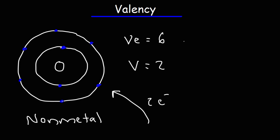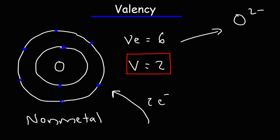Once oxygen gains those two electrons, it's going to turn into the oxide ion. The valency tells us the number of bonds that this element prefers to form when making a chemical compound. Think of water — in water, oxygen has two bonds. Another molecule is carbon dioxide; in that structure, each oxygen atom has two bonds. So oxygen likes to form two bonds because its valency is two.